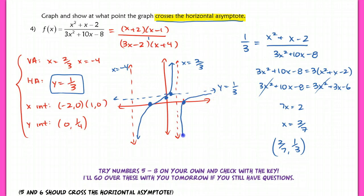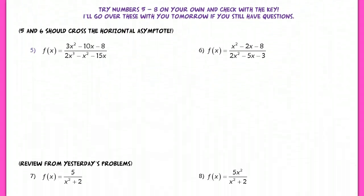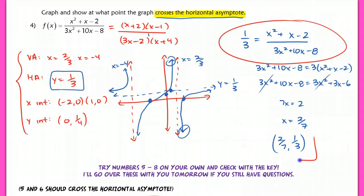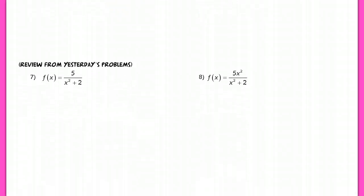Now it's consistent with odd multiplicities — the two branches go in opposite directions as they approach the vertical asymptote, and the last branch is on the other side. That's the end of the lesson. Double check that you can do these problems. Check the key for number 3. Then try problems 5 and 6 — these cross the horizontal asymptote; at least one will require solving for the crossing point like we did in problem 4. The last two problems are review from yesterday. Nice job — I'll see you in class tomorrow.